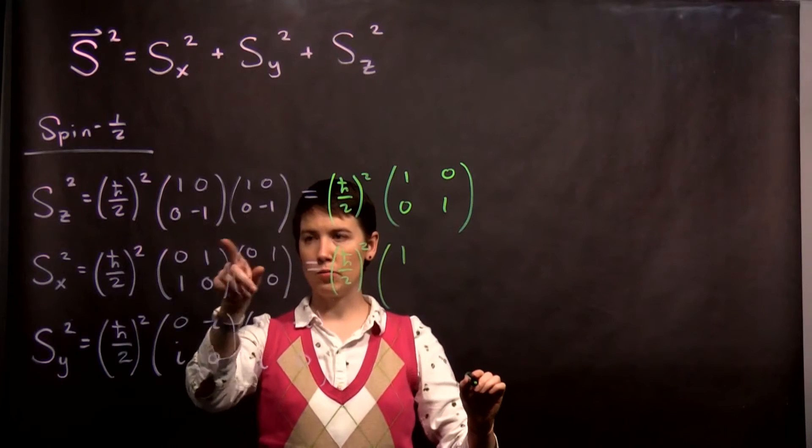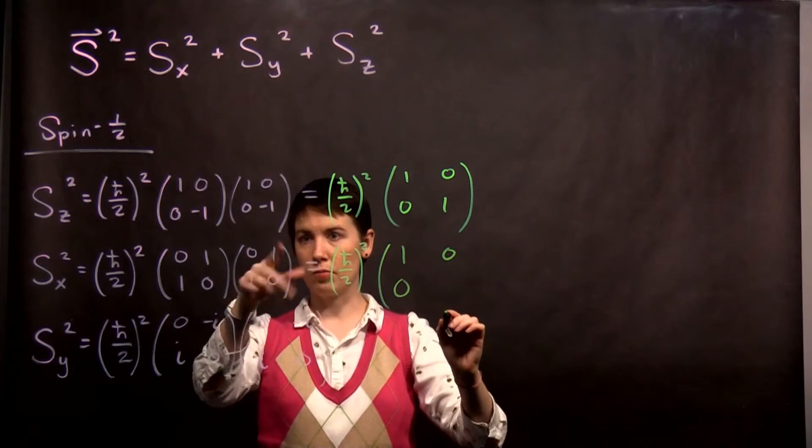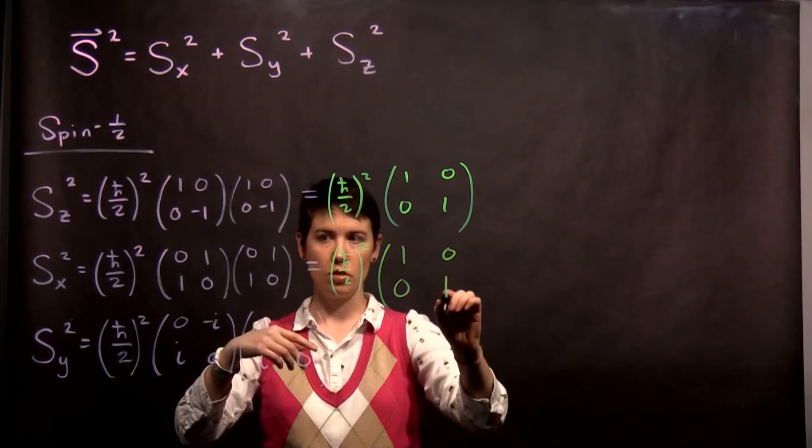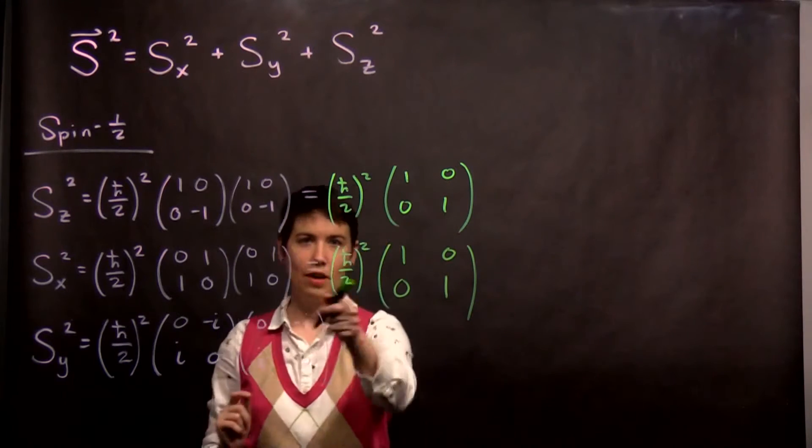Row column, zero times one, one times zero, zero. Row column, zero. Row column, one times one is one, zero times zero is one. Again, we have gotten the identity matrix and the same coefficient.